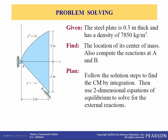Let's do another example. Here we have a steel plate that is 0.3 meters thick with a density of 7850 kilograms per cubic meter. Find the location of the center of mass and compute the reactions at A and B. Our plan is to follow the solution steps to find the center of mass by integration, then use the two-dimensional equations of equilibrium to solve for the external reactions. One bound of the curve is y squared equals 2x, and the other bound is y equals minus x.